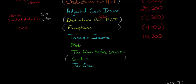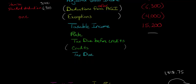We're not going to put a single rate here — we're just going to show what our tax due is before credits. That total is $1,818.75, and that's our tax due before any credits.